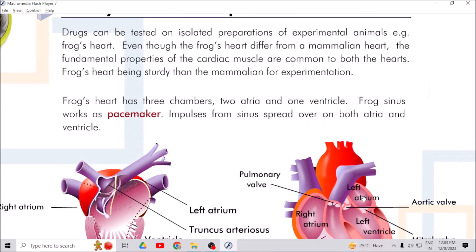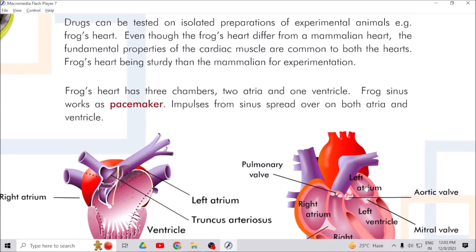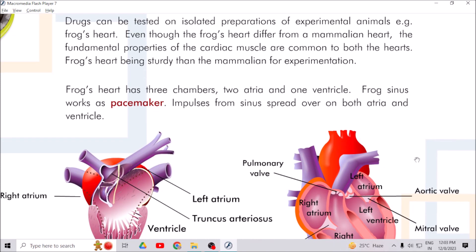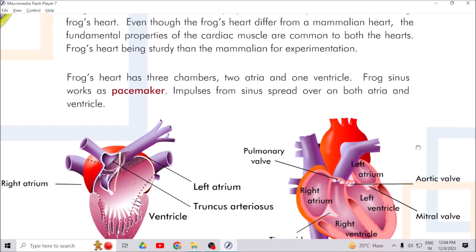Drugs can be tested on isolated preparations of experimental animals, for example frog's heart. Even though the frog's heart differs from a mammalian heart, the fundamental properties of the cardiac muscle are common to both hearts, with frog's heart being sturdier than the mammalian for experimentation.